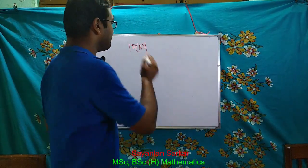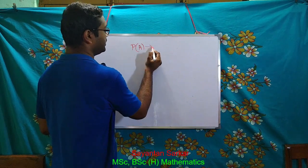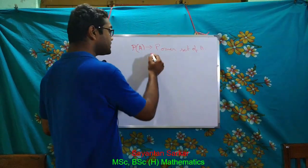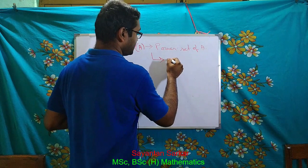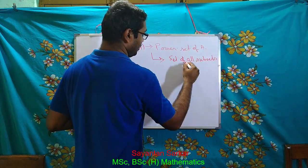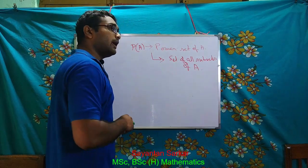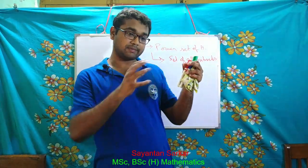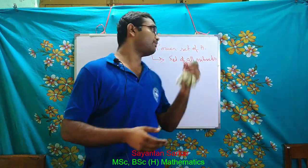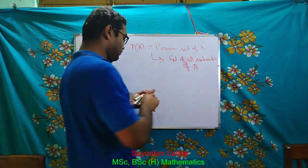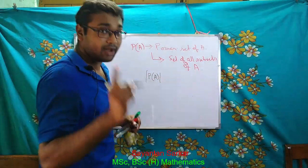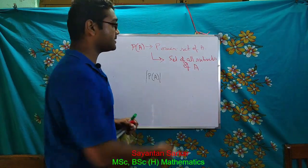I am interested to find out the number of elements in the power set of A. The power set of A is the set of all subsets of A. So if I find the cardinal number of the power set — the number of elements inside the power set — I shall get the number of subsets of A.